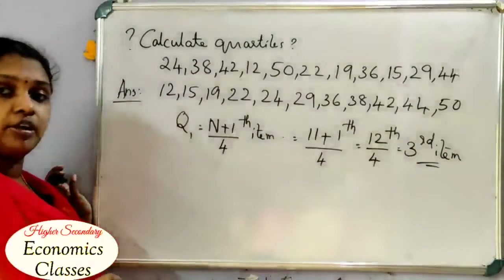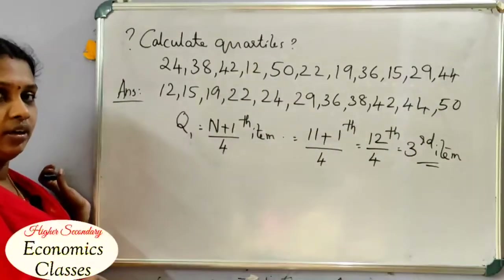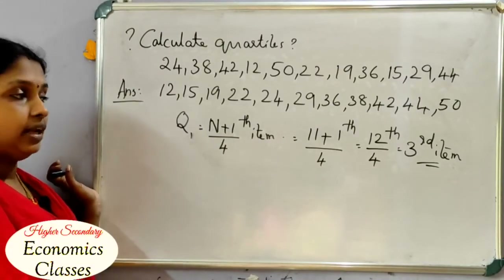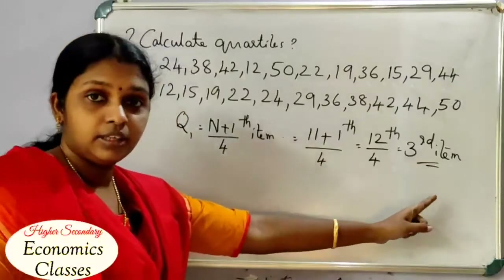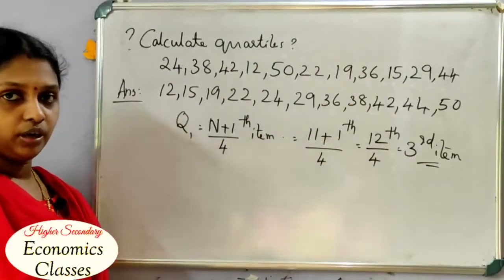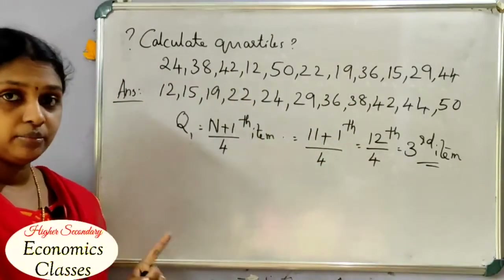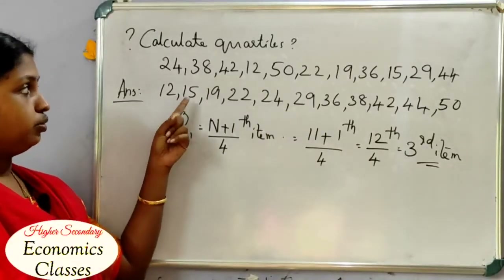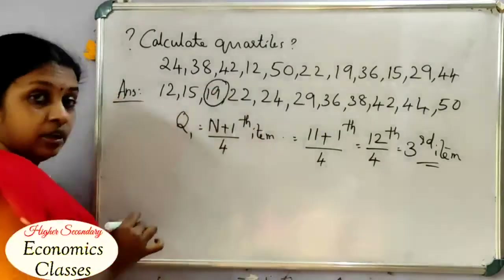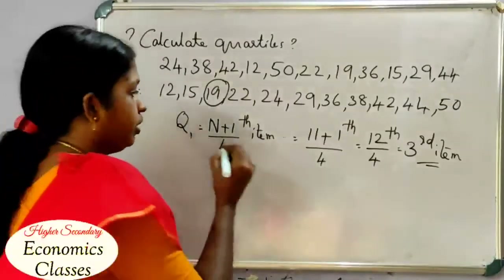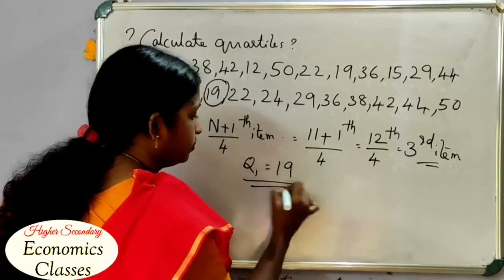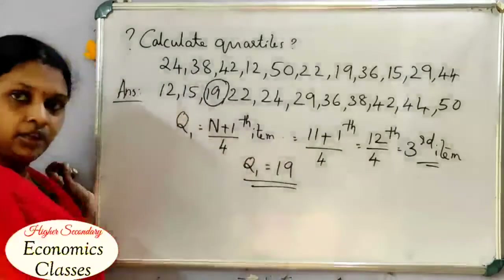This is the Q1 value. We go to ascending order. The value of the 3rd item: 1, 2, 3 — the value is 19. So Q1 is equal to 19. That is the answer.